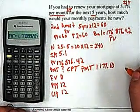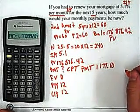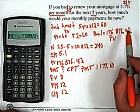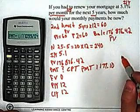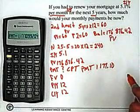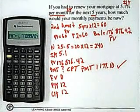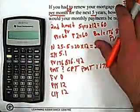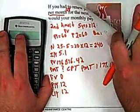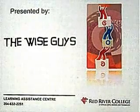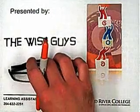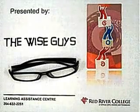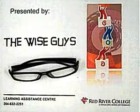These are just our new payments of $1,177.10 — that's the size of our new payments. The question asked how much would your monthly payments be now, and we are done. These are our new payments: $1,177.10. This has been another presentation of the Wise Guys tutoring videos. If you need any further assistance, please talk to Ron Hammerling in the Learning Assistance Center. Have a good day.